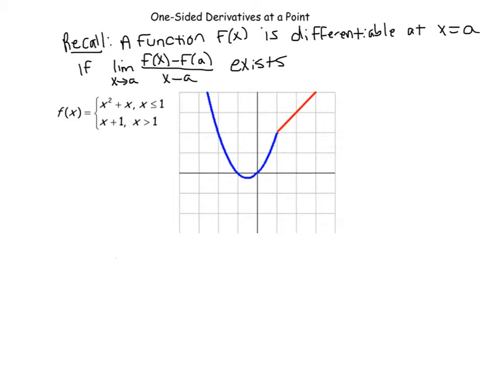In this video we're going to look at one-sided derivatives at a point and as they apply mainly to piecewise functions as we have in front of us. Usually the question asked with a piecewise function is: is this function differentiable at that changeover value? You probably wouldn't have the graph in front of you, but the graph makes it pretty clear — we see a corner, and since there's a corner it's not differentiable there. The point of this video is to give you tools to use if you have to do this more analytically rather than just looking at a graph.